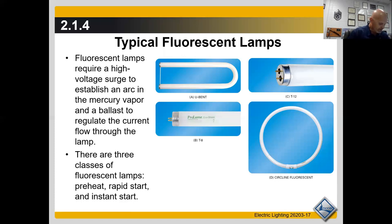Fluorescent lamps have two electrical requirements. A high voltage surge is needed to establish the arc in mercury vapor. Once started, the gas offers decreasing resistance, so current must be regulated. Otherwise the lamp would draw more and more power and rapidly burn out. This is why fluorescent lamps operate in fixture circuits containing a ballast that provides the required voltage surge to start up and then controls current flow.